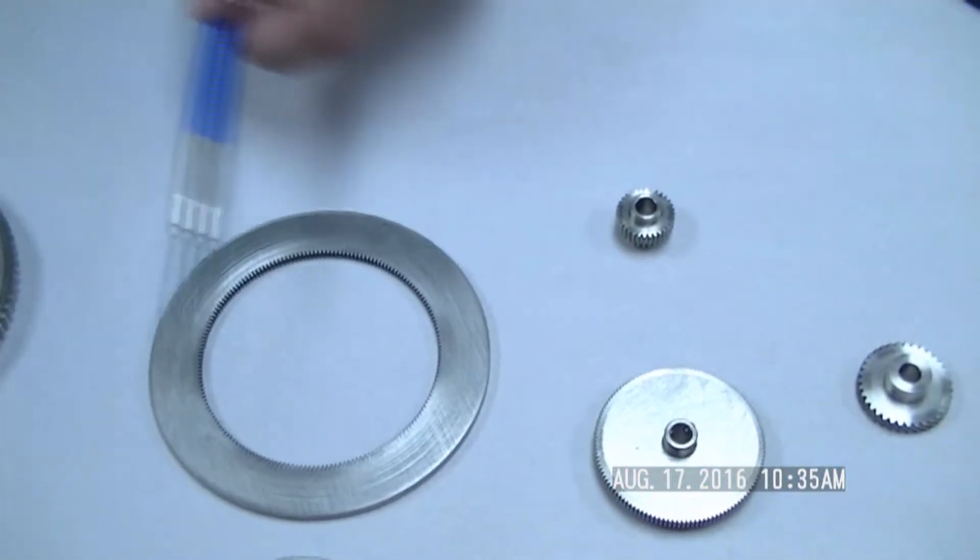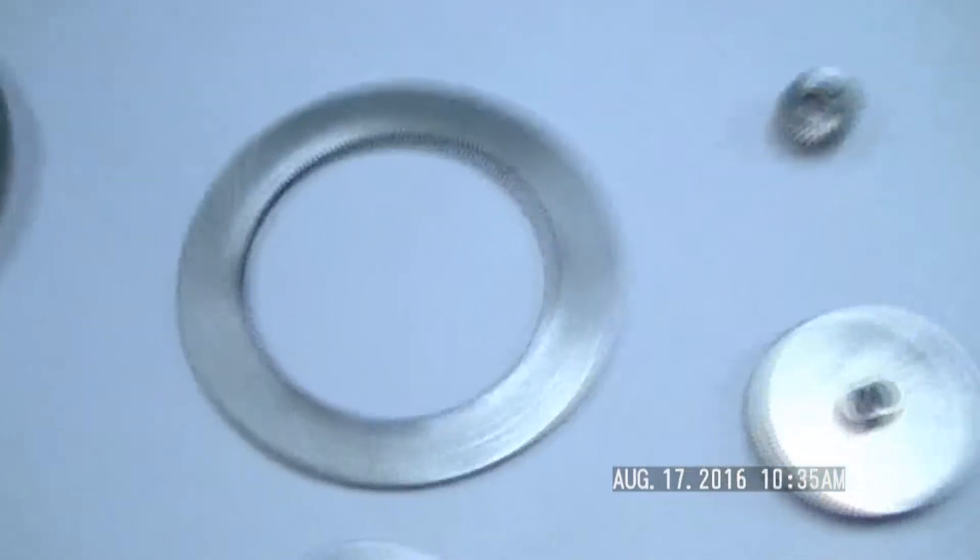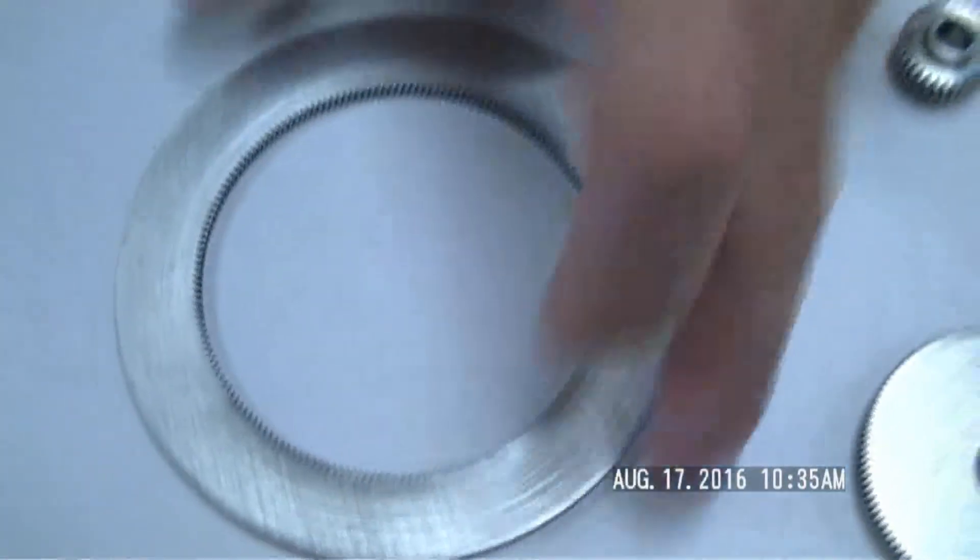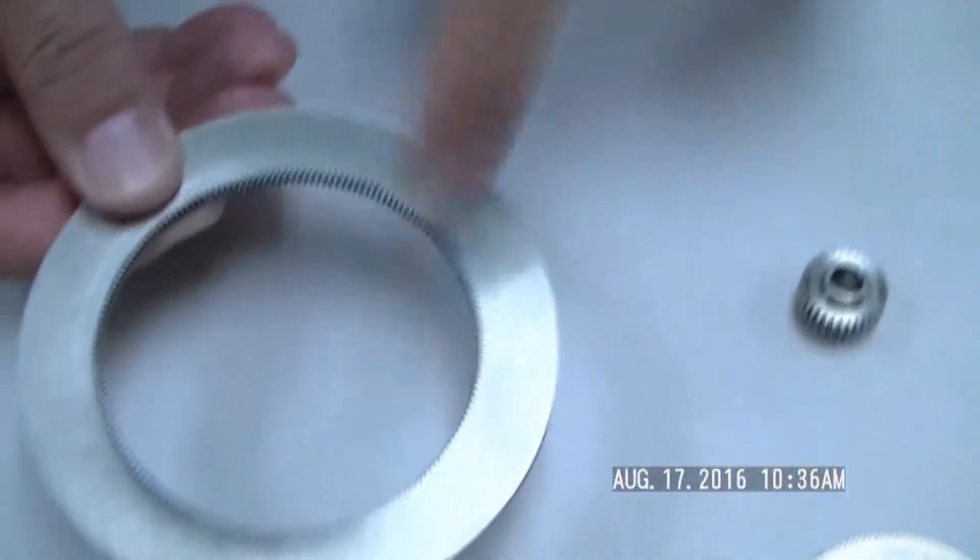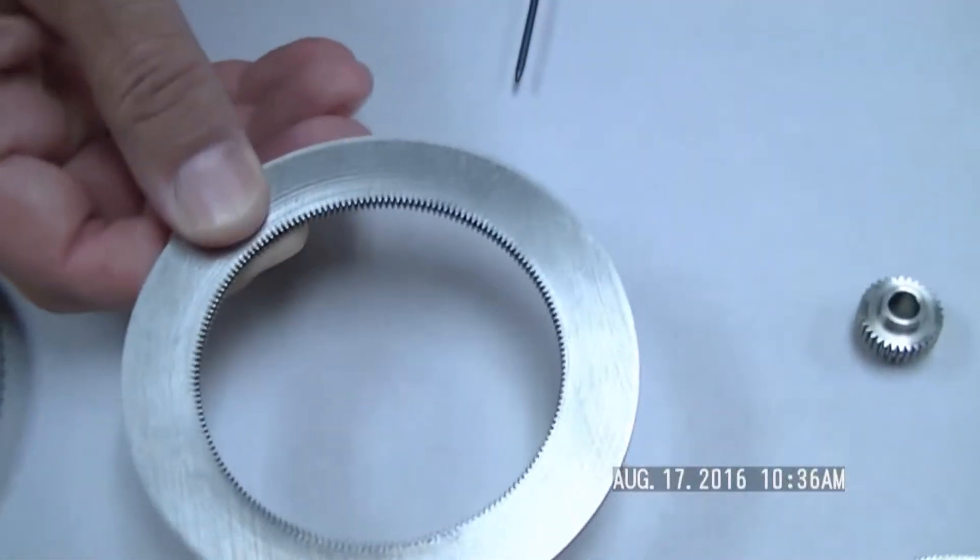Okay, moving right along. These are our internal gears. You see different pitches here. Basically, in an internal gear, you have the teeth on the inside of the gear instead of on the outside.